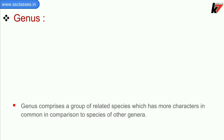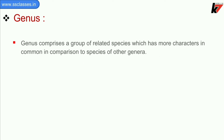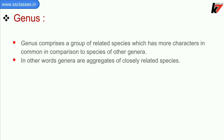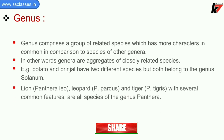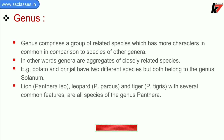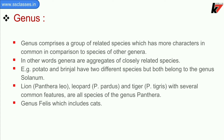Now we will see genus. Genus comprises a group of related species which has more characters in common in comparison to species of other genera. For example, potato and brinjal are two different species but both belong to genus Solanum. Similarly, Panthera leo (lion), Panthera pardus (leopard), and Panthera tigris (tiger), with several common features, are all species of the genus Panthera. Genus Felis, which includes cats, is a separate genus.